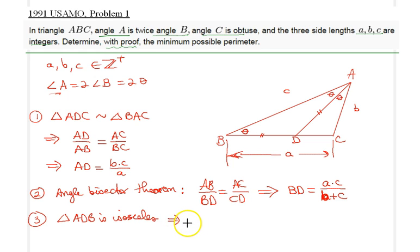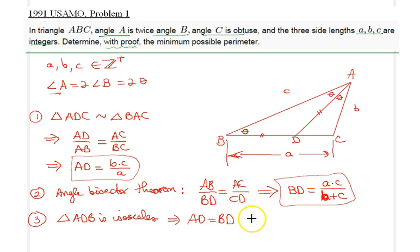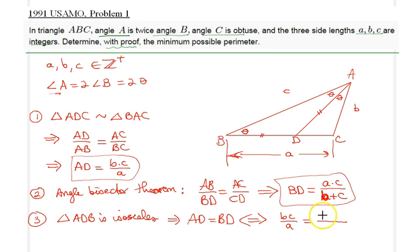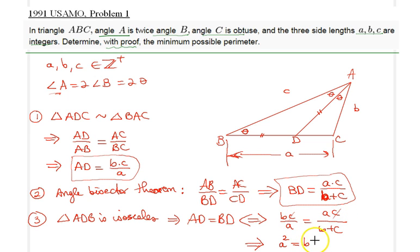Finally, triangle ABD is isosceles, which implies AD equals BD. Substituting the results we found earlier — AD equals BC over A, and BD equals AC over B plus C — and equating them, the C's cancel and we arrive at our key result: A squared equals B times (B plus C).